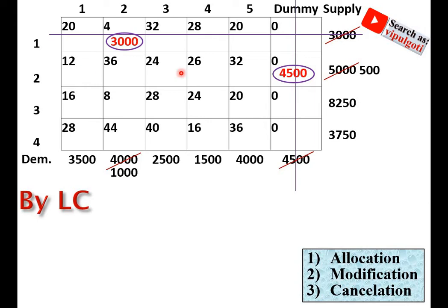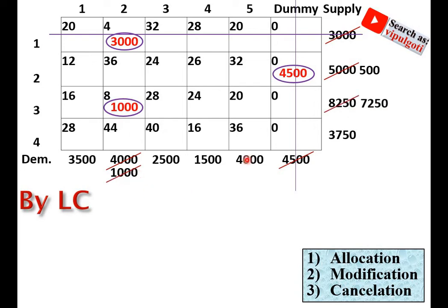Select the minimum cost from the remaining cells — 8 is the minimum cost, so allocation is made there. Looking at the corresponding supply and demand and selecting the minimum, the allocation is 1,000. Supply and demand are modified, and that row is cancelled.